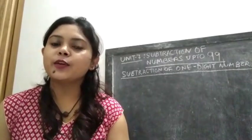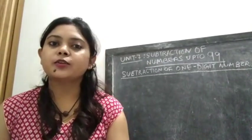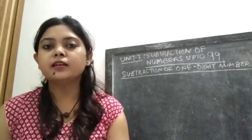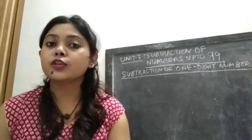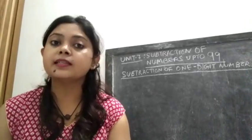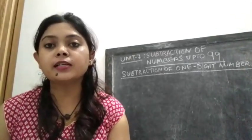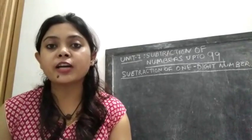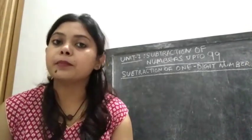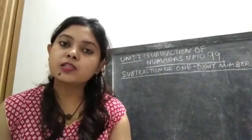Hello students of UKG, welcome to the maths class. Today we are going to start a new chapter — Unit 7, subtraction of numbers up to 99. Today we are going to learn subtraction of one digit number. So all of you focus on the board.